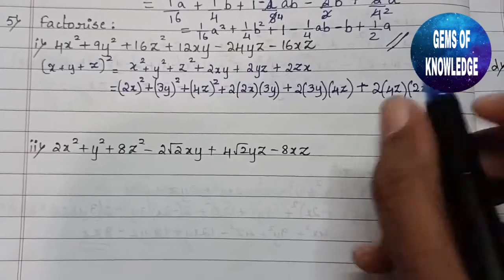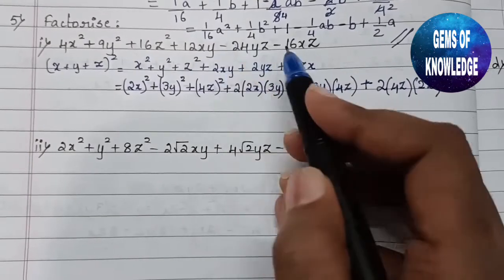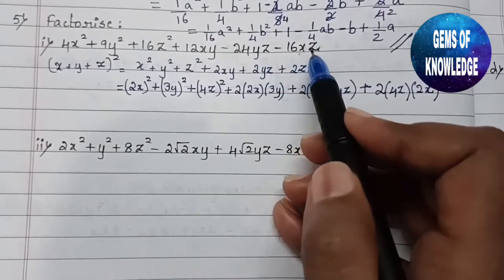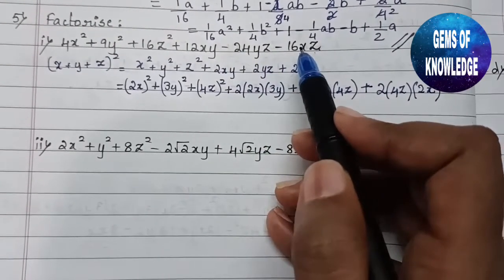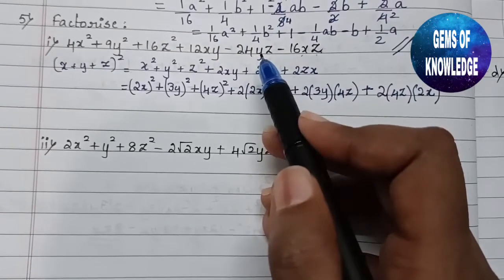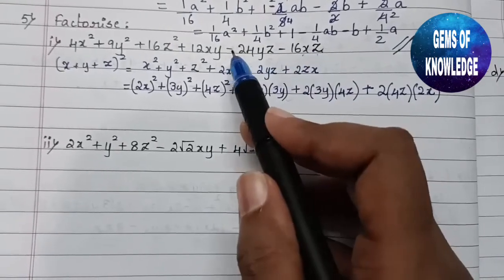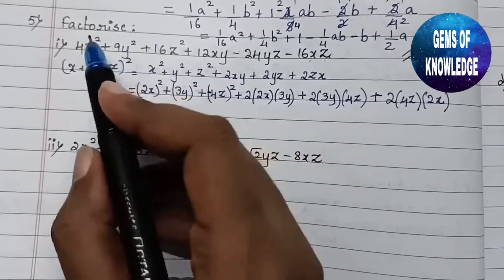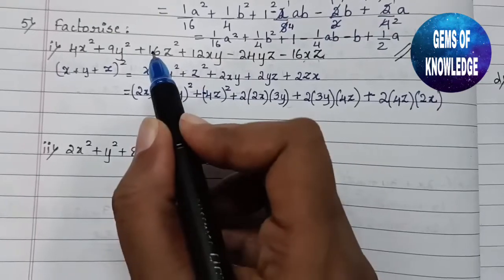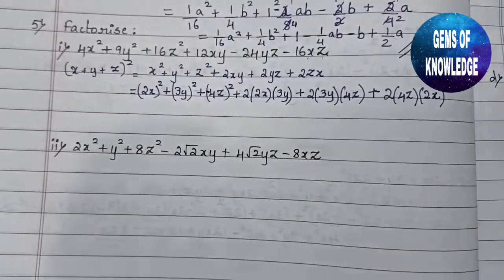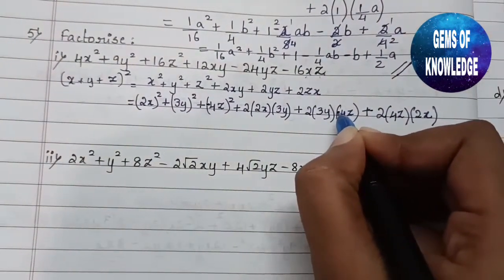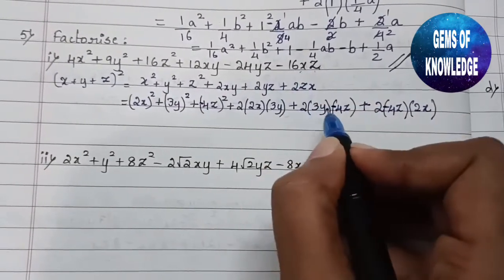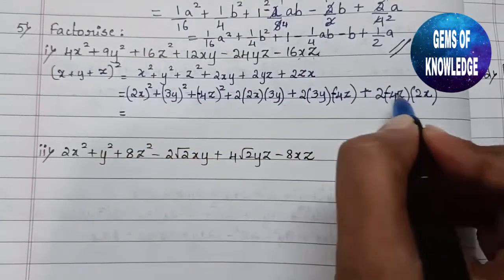Both cross terms involving z are minus, while the xy term is plus. Since x is not minus (the xy term is positive), it must be z that is negative. So z = −4z. When squared, (−4z)² = +16z², which is correct. And 2 × 3y × (−4z) = −24yz ✓, and 2 × (−4z) × 2x = −16zx ✓. This confirms z must be −4z.